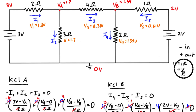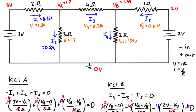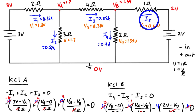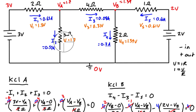Using Ohm's law (current = voltage / resistance), we calculate each branch current: i1 = 1.3 / 2 = 0.65 A; i2 = 1.7 / 3 = 0.57 A; i3 = 0.31 / 4 = 0.08 A; i4 = 1.39 / 2 = 0.70 A; and i5 = 0.61 / 1 = 0.61 A.